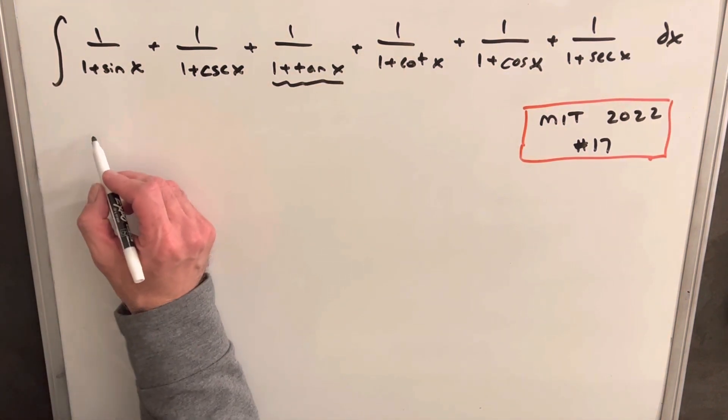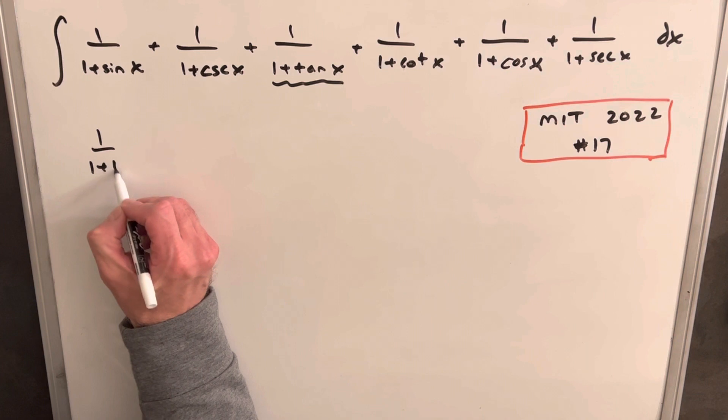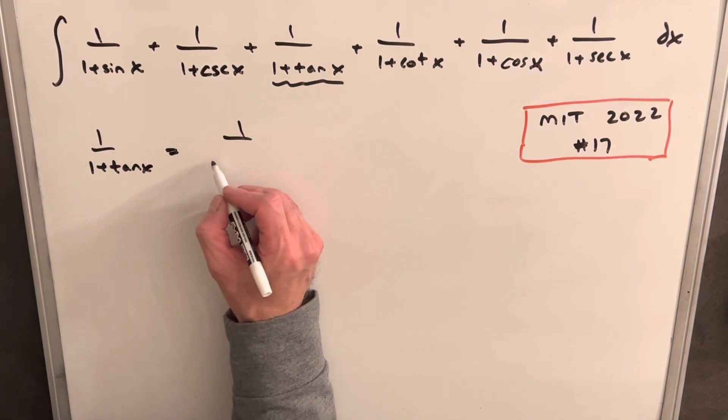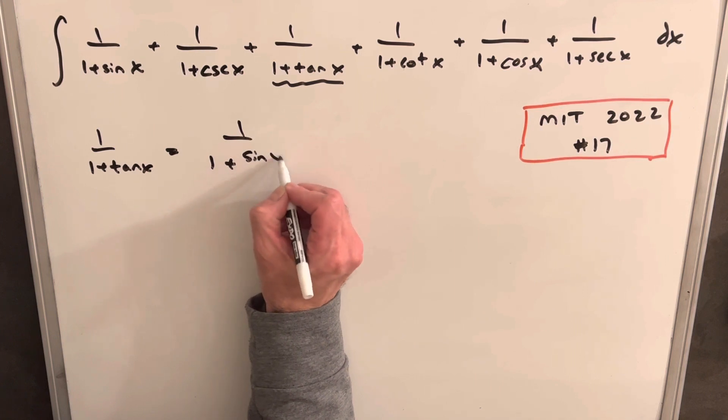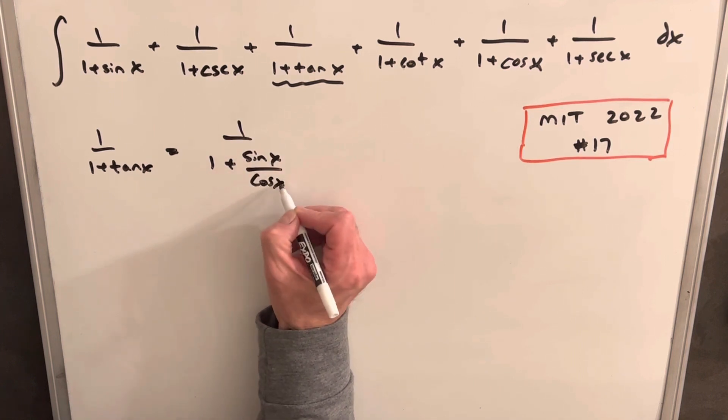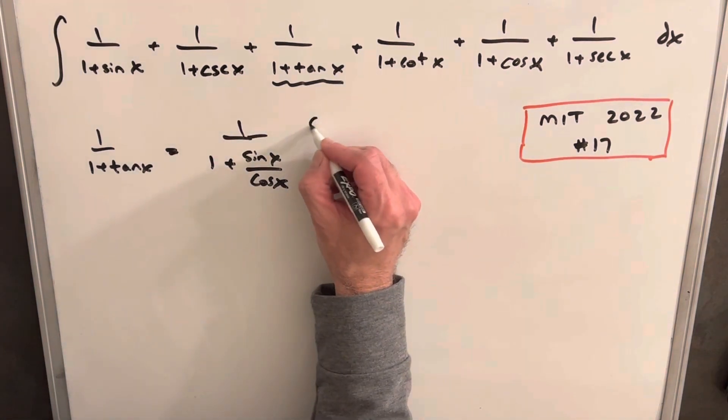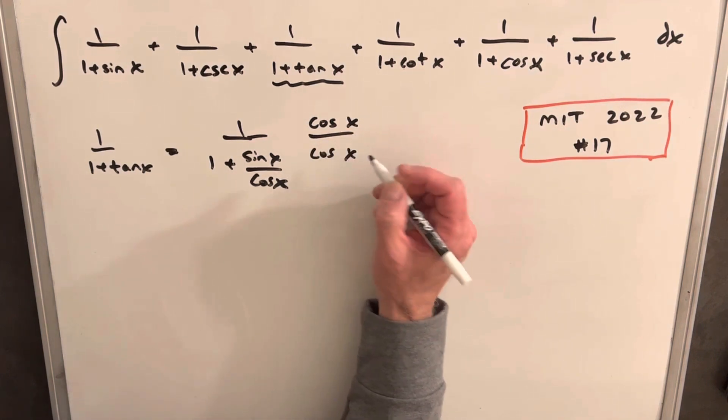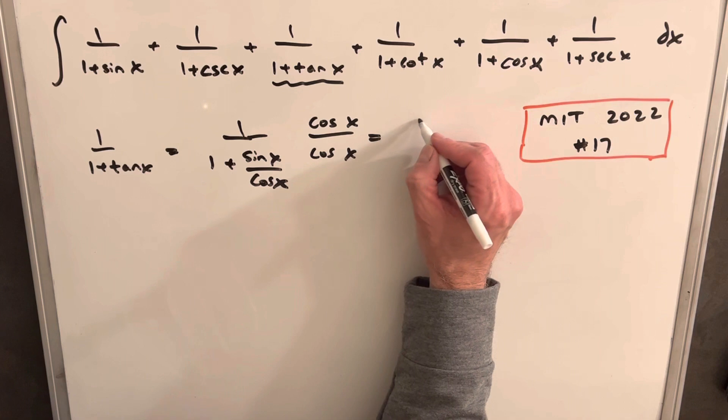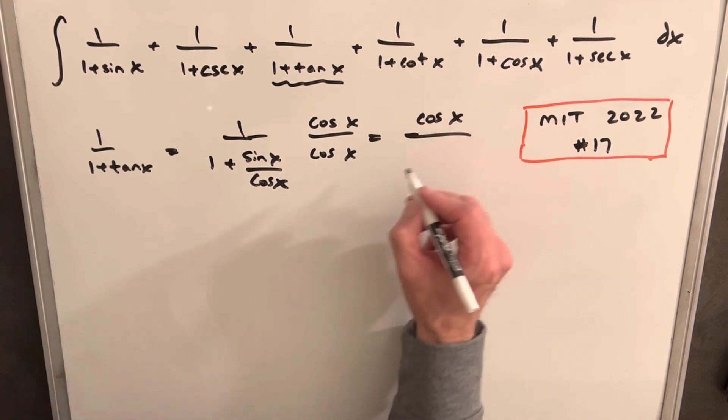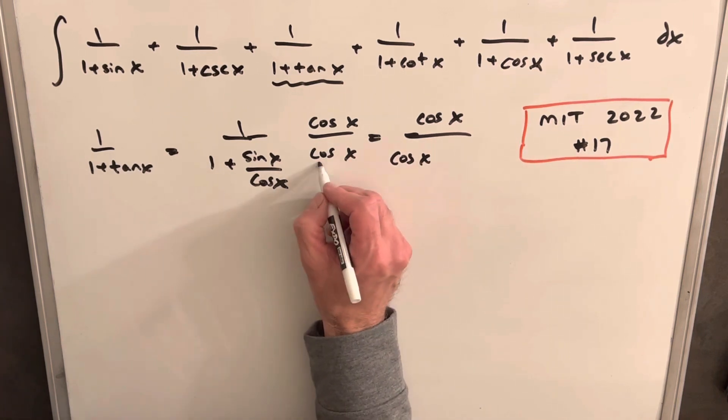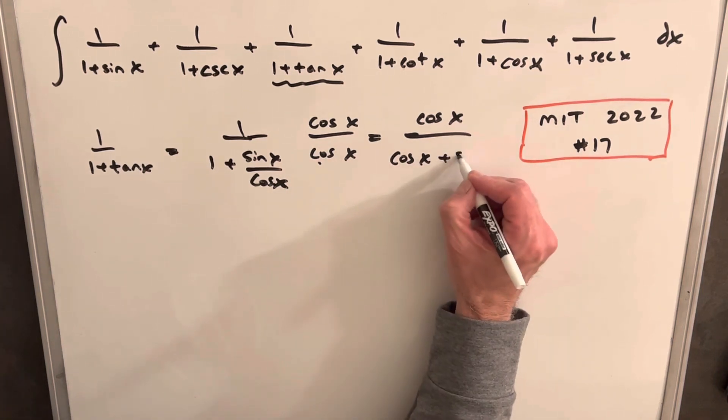We'll start with our tan. So we'll have our 1 over 1 plus tan x. And we can write this as 1 over 1 plus sine x over cosine x. Then let's see what happens if we multiply through by cosine over cosine. Then this thing is going to be cosine x over cosine times 1 is cosine plus then the cosine. This will cancel with this and we'll just have a sine x.